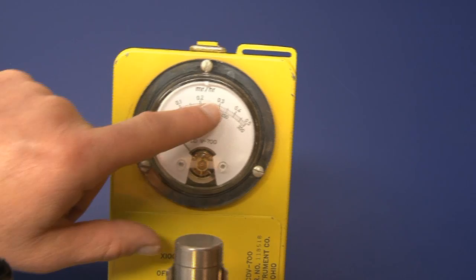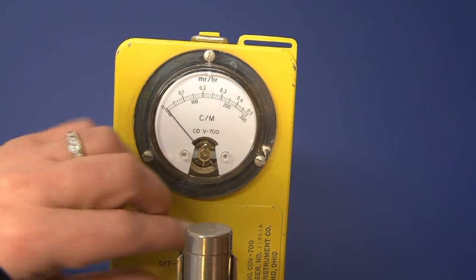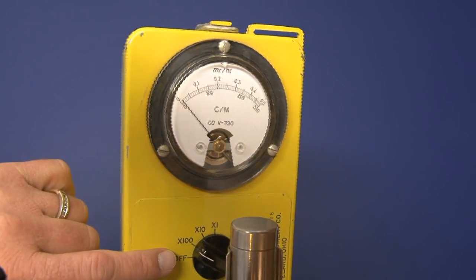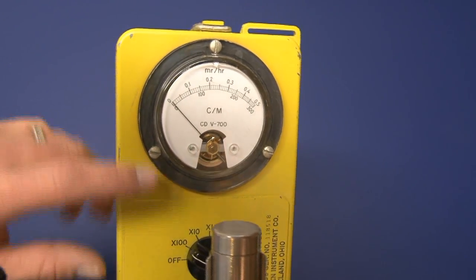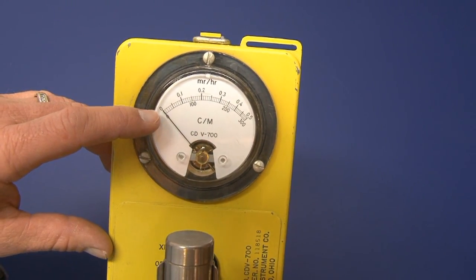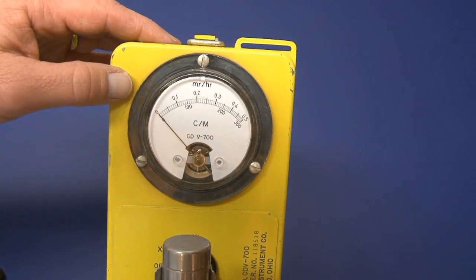You just multiply whatever you're seeing on your meter face times the position on your rotating switch. So on the times 100 scale you've got an operating range of from 0 to 50 MR per hour or 0 to 30,000 counts per minute.